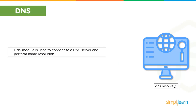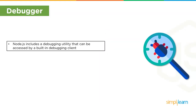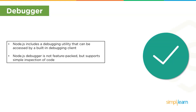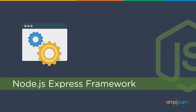The next component is DNS. The DNS module enables name resolution — for example, looking up IP addresses of hostnames. It connects to a DNS server and performs name resolution using dns.resolve(), and also performs name resolution without network communication using dns.lookup(). The final component is the debugger. Node.js includes an out-of-process debugging utility accessible via the V8 inspector and built-in debugging client. It can be invoked in the terminal using the inspect keyword before the JavaScript filename, for example with myscript.js.